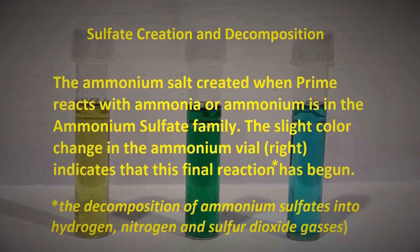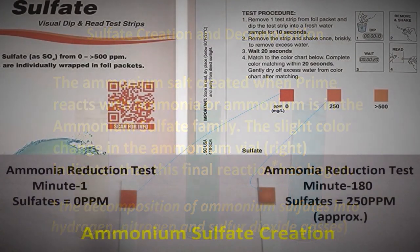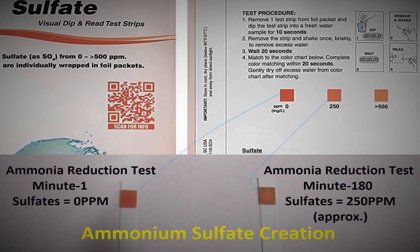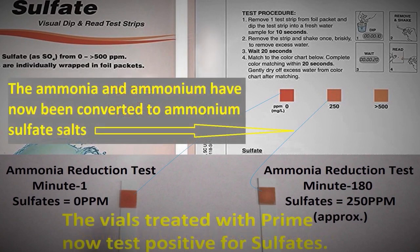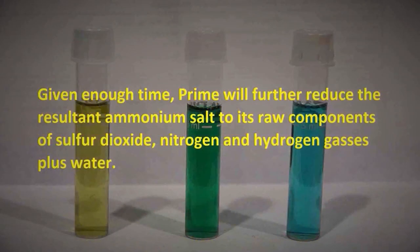Sulfate creation and decomposition. The ammonium salt created when Prime reacts with ammonia or ammonium is in the ammonium sulfate family. The slight color change in the ammonium vial on the right indicates that this final reaction has begun. At test minute 1, sulfates are 0 PPM; at test minute 180, sulfates are approximately 250 PPM. The vials treated with Prime now test positive for sulfates. Given enough time, Prime will further reduce the resultant ammonium salt to its raw components of sulfur dioxide, nitrogen, and hydrogen gases, plus water.